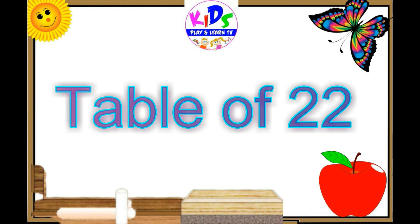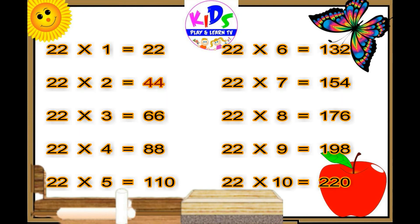Let's repeat. 22 ones are 22, 22 twos are 44, 22 threes are 66, 22 fours are 88, 22 fives are 110, 22 sixes are 132, 22 sevens are 154, 22 eights are 176, 22 nines are 198, 22 tens are 220.